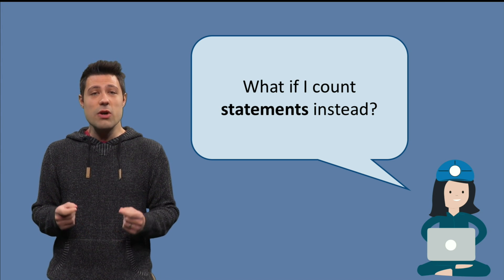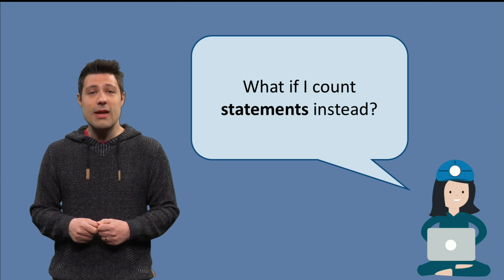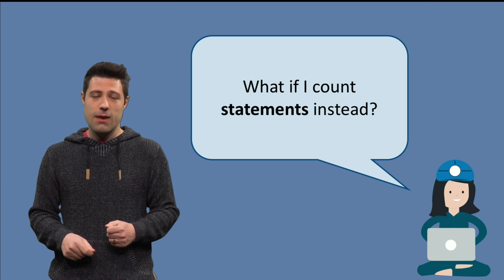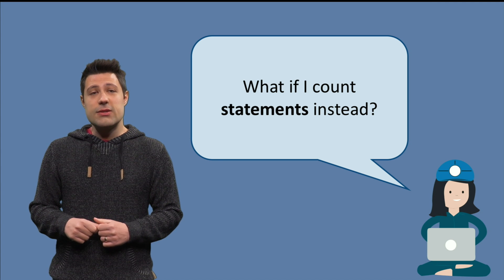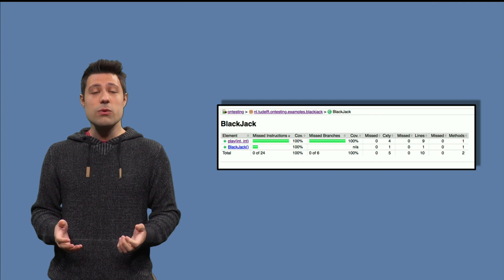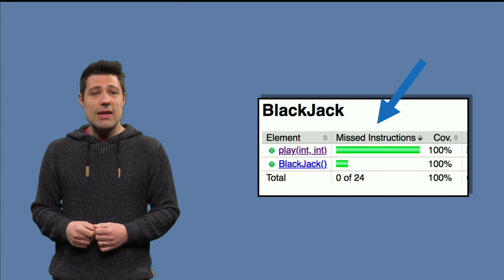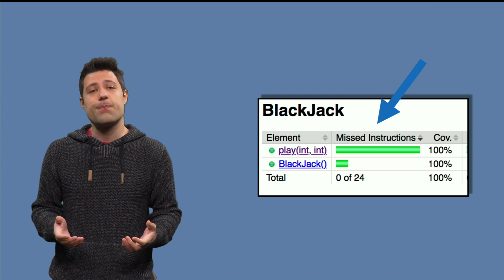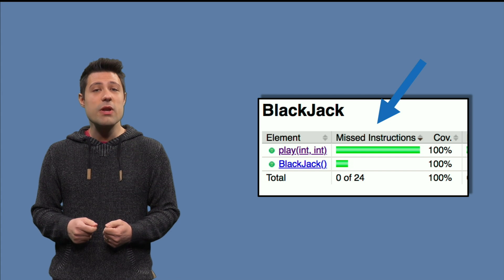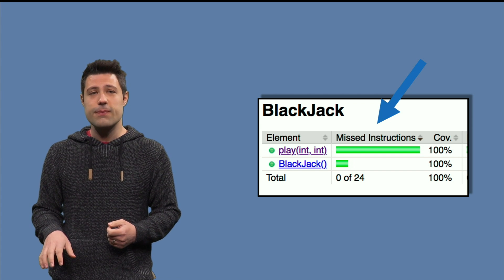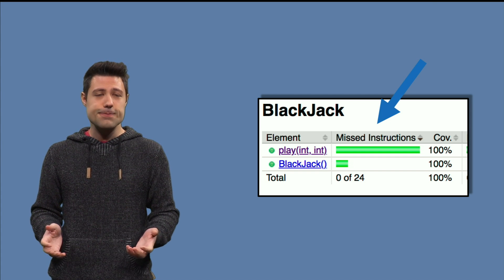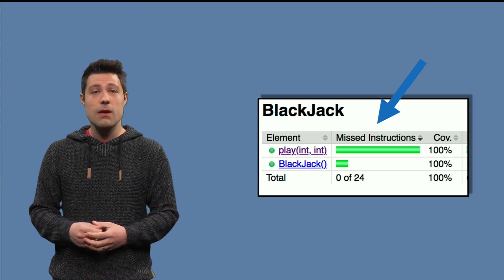Some other tools even show instruction coverage, as they do it at bytecode level. For example, this is the code coverage report of a tool called JaCoCo. If we zoom in, we see that it has missed instructions. Our Blackjack program has 24 instructions at bytecode level, and our tests cover them all. Good.